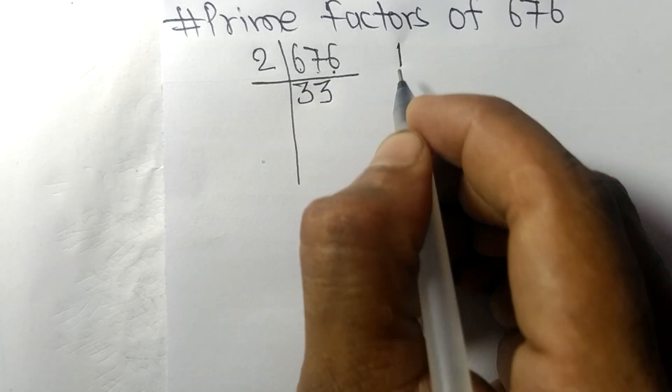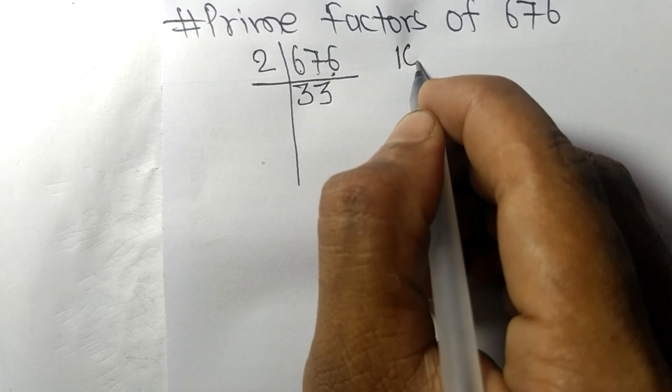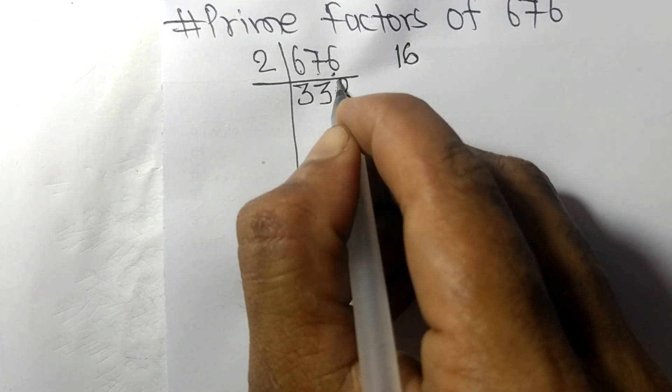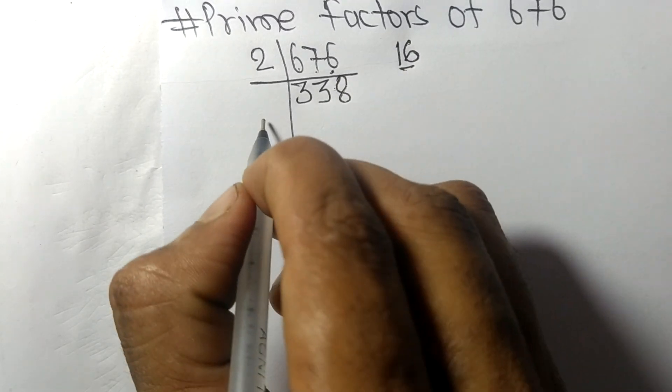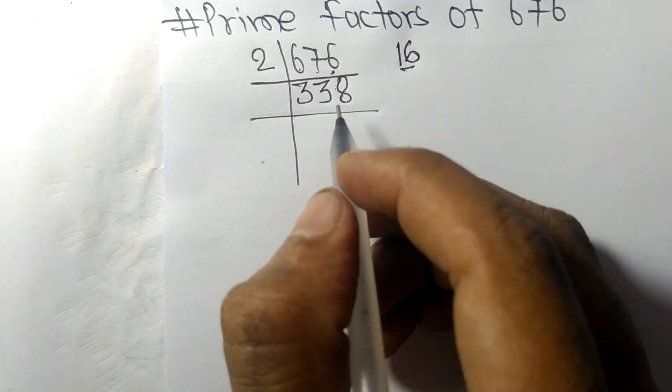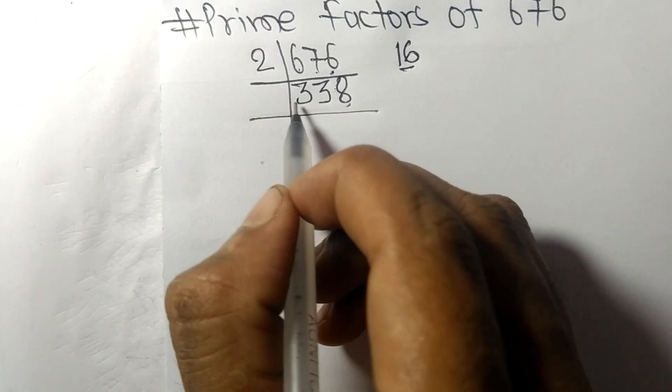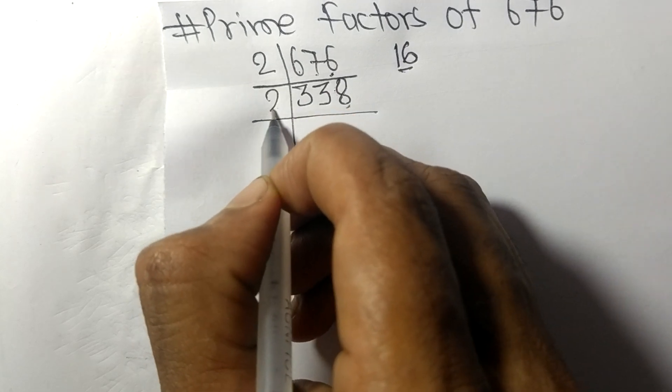6 remainder 1, then 16. 2 times 8 equals 16. Again we have an even number 8 at the last, so it is divisible by 2.